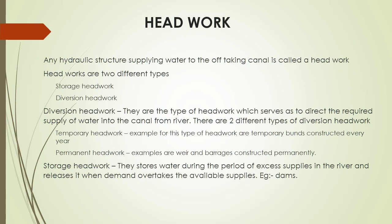There are two different types of diversion headwork. Temporary headwork — examples are temporary bunds constructed every year. Permanent headwork — examples are weir and barrage, which are constructed permanently. Storage headwork stores water during the period of excess supplies in the river and releases it when demand overtakes the available supplies. An example is a dam.